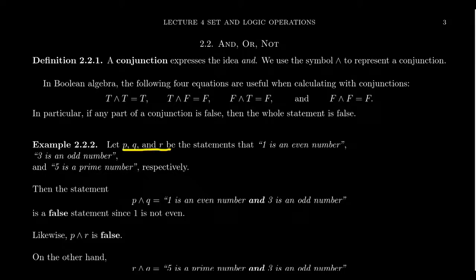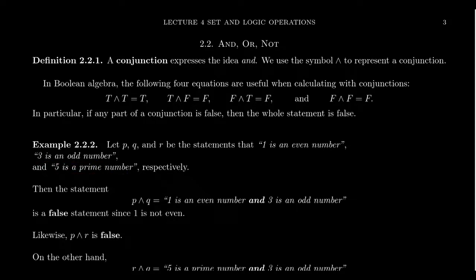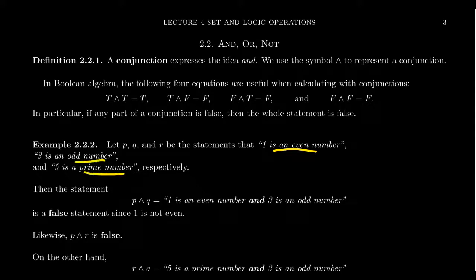Consider these three primitive statements: P, Q, and R. Let P be the statement 'one is an even number' — yes, I know that's false, but false statements are still statements. Let Q be 'three is an odd number' and R be 'five is a prime number'. So P, Q, and R respectively — meaning the order I listed these is the same order I listed them.